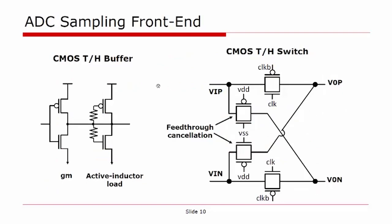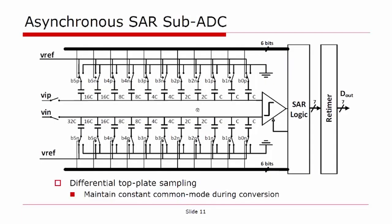The ADC sampling front-end is built using the same building blocks as the CTLE. The buffer uses an inverter-based GM cell and an inverter-based active inductor load. The track-and-hold switches are implemented using complementary pass gates, clock and clock-bar. In order to cancel the drain-to-source capacitance feedthrough from input to output, a feedthrough cancellation scheme using cross-coupled always-off pass gates is employed. The asynchronous SAR sub-ADC uses differential triplet sampling, which keeps the input common mode of the comparator constant during conversion, setting it to its optimum operating point.